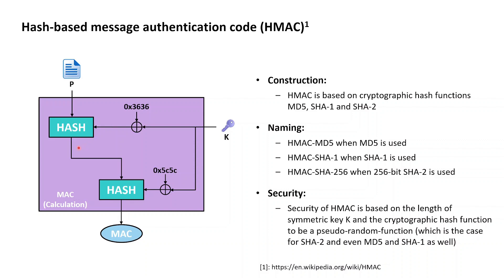HMAC then conducts a second hash calculation, where the input to this second hash is the result of the first hash calculation concatenated with the result of the symmetric key K's bits XORed with the bit string represented in hex as 0x5c5c. The result of this second hash calculation is the resulting HMAC tag.